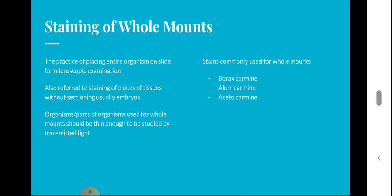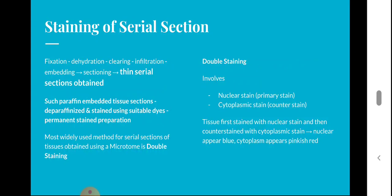Stains commonly used for whole mounts are borax carmine, alum carmine, and acetyl carmine. For serial sections — which are obtained using a microtome, coming one after another as a ribbon — there is the presence of paraffin both inside and around the tissue.